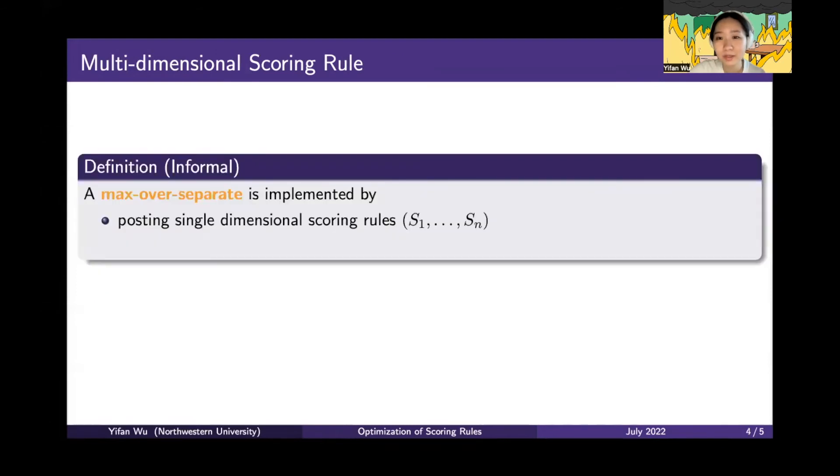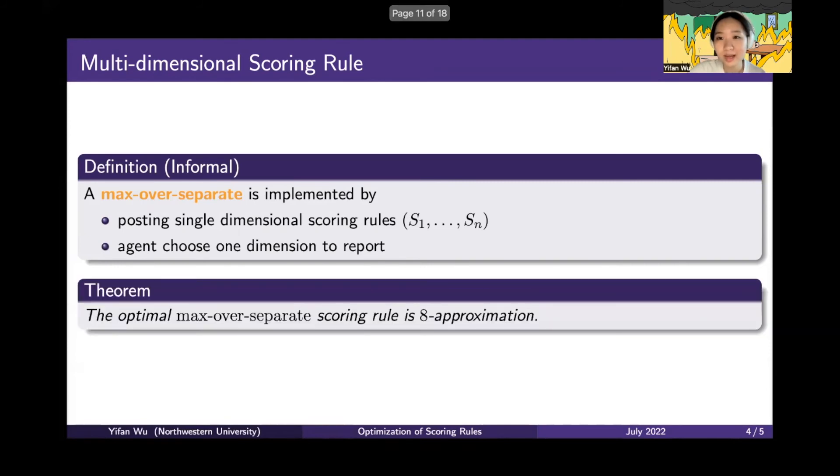We design the class of max over separate scoring rules, which can be implemented by posting single-dimensional scoring rules and letting the agent choose one dimension to report. We show this kind of scoring rule is an 8-approximation to the optimal.